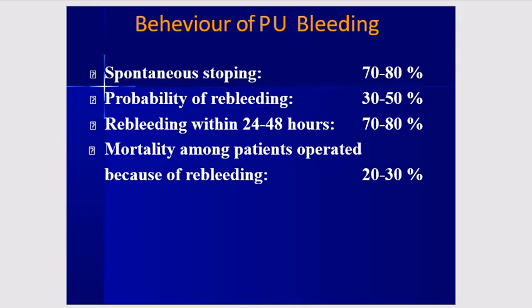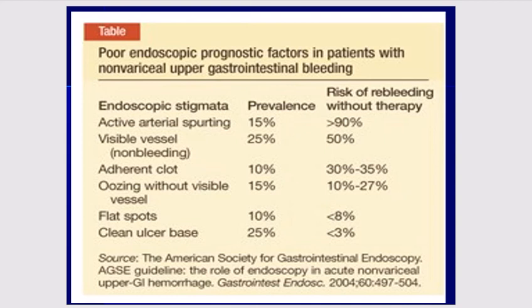How do peptic ulcers bleed? Spontaneous stopping occurs in 70 to 80% of cases. The probability of re-bleed is 30 to 50%, with re-bleeding within 24 to 48 hours occurring in 70 to 80%. Mortality among patients operated on because of re-bleeding is about 20 to 30%.